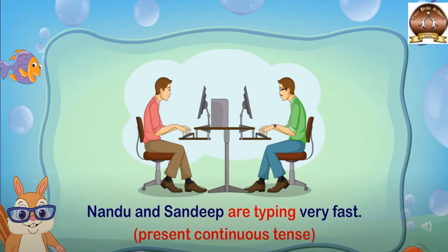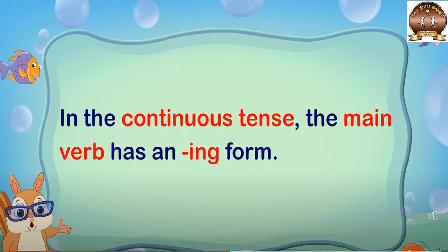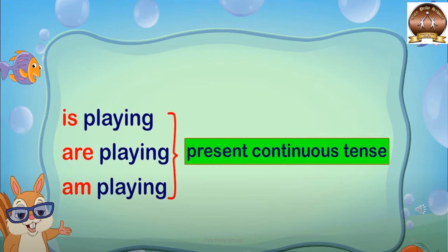Let's see an example. 'Nandu and Sandeep are typing very fast.' In this sentence, 'are' is the helping verb, 'type' is the main verb in ing form. So 'are typing' makes it a present continuous tense sentence. Don't forget that in continuous tense, the main verb always has an ing form. In present continuous tense, we use helping verb, main verb, and ing form.